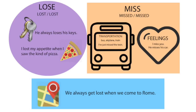Then in the orange rectangle, we have miss. The past of miss is missed — we pronounce it with a T at the end: missed. It's a regular verb. I give you two graphs to help you understand and make the difference between lose and miss.